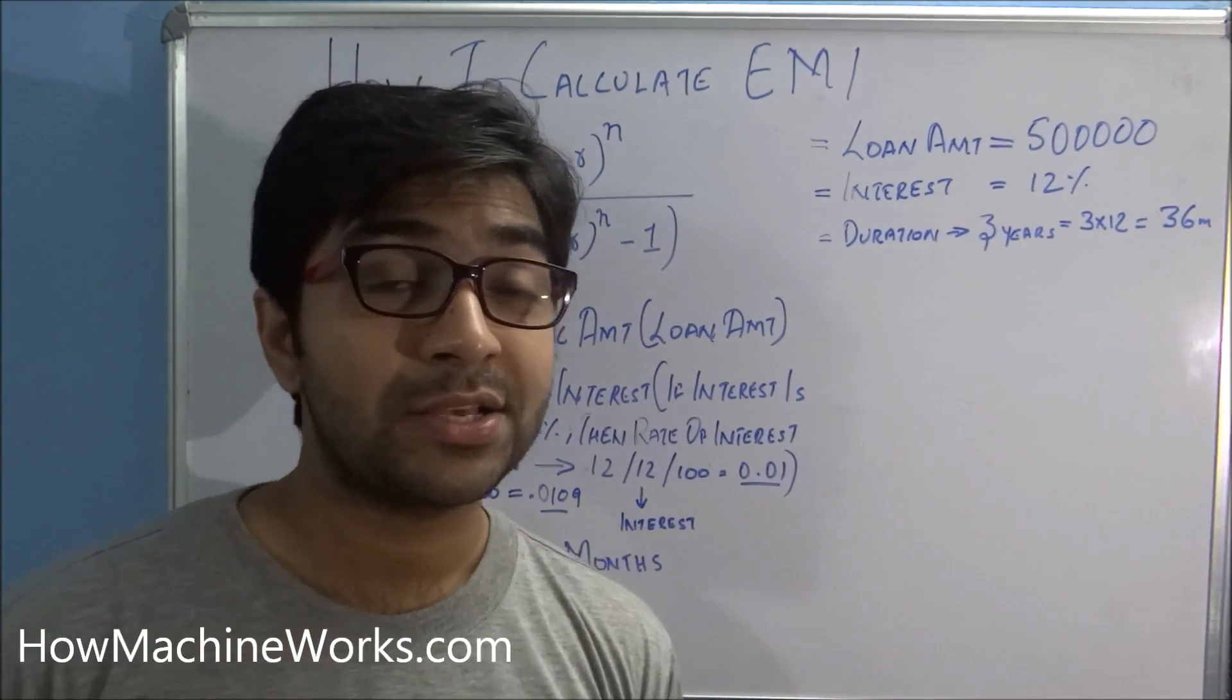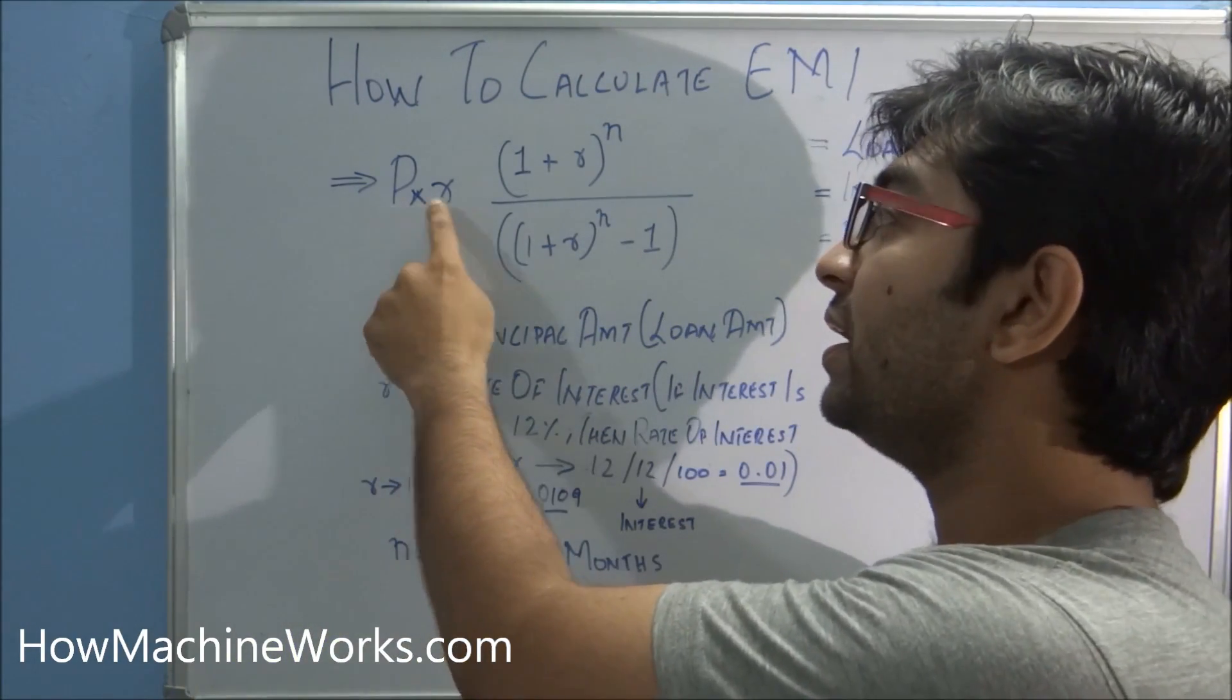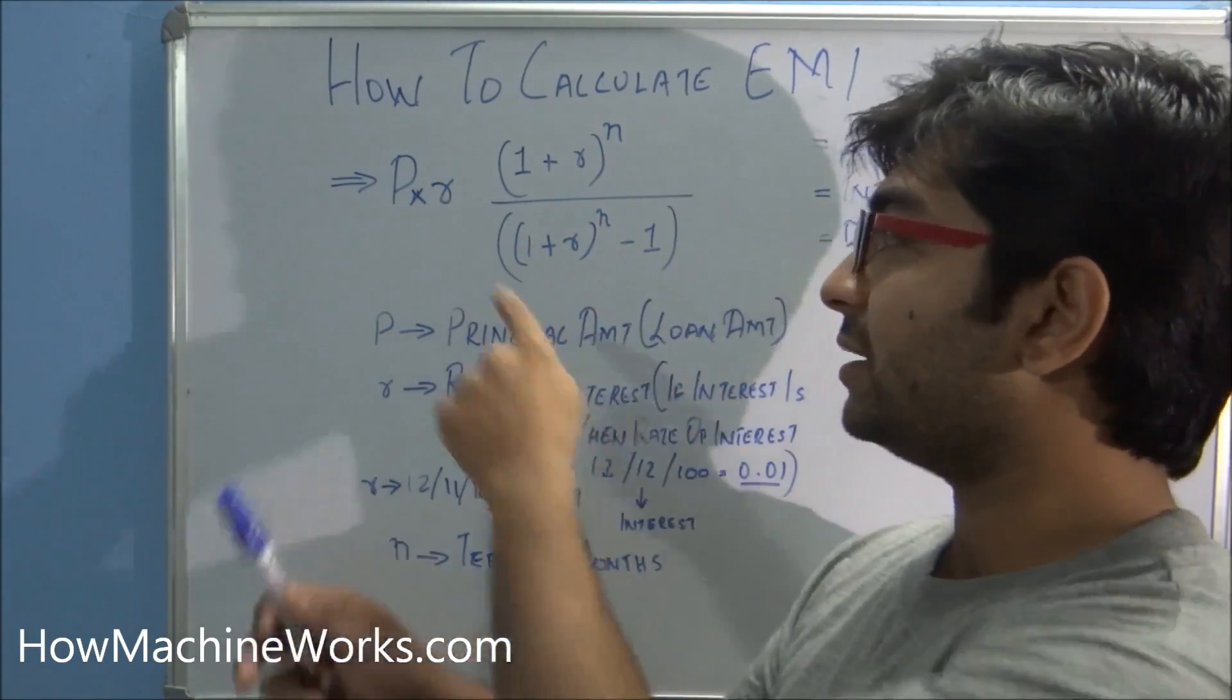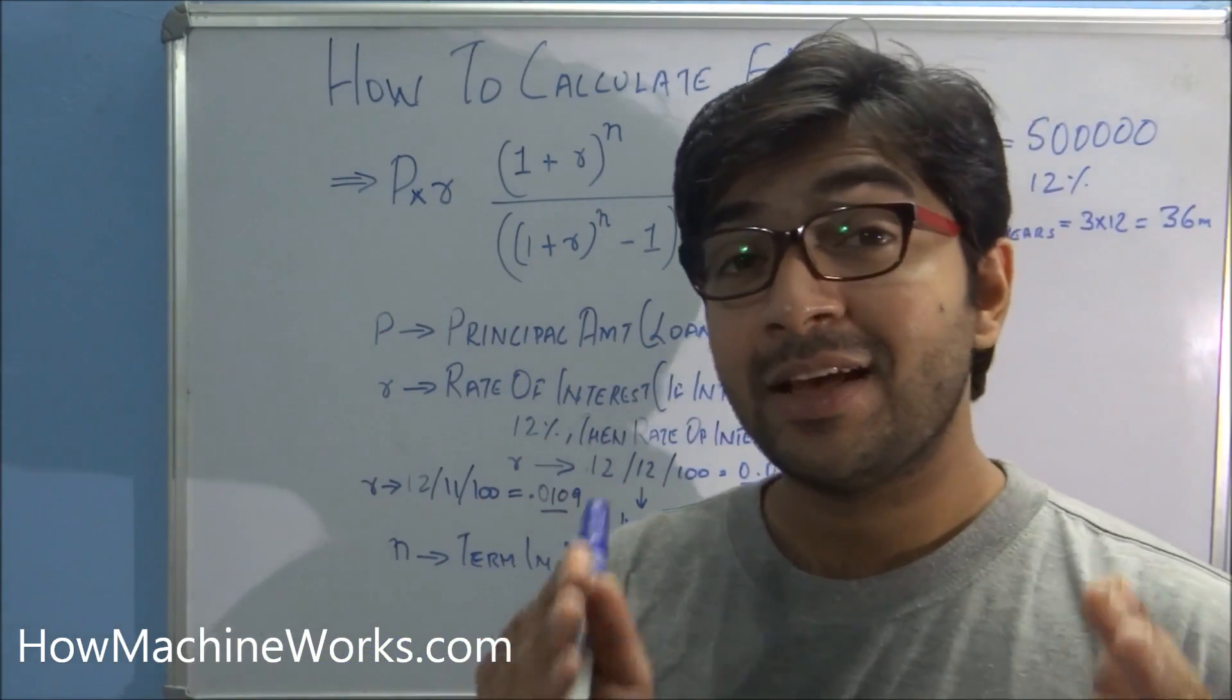So let's go towards the formula. For calculating, the basic data required: there are P, R, and N. Let's see what's P. P is the principal amount, that's the loan amount that we have taken as 5 lakh, for example.